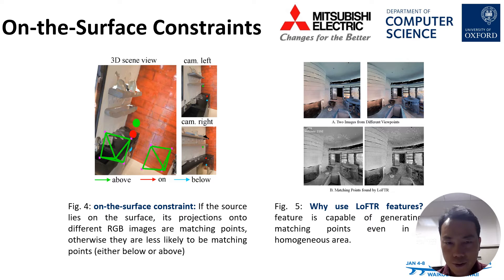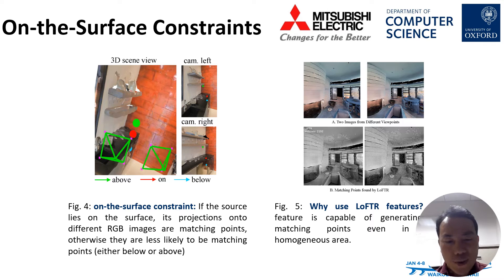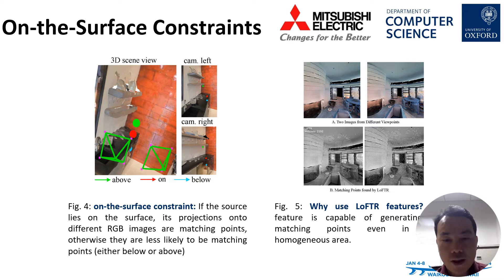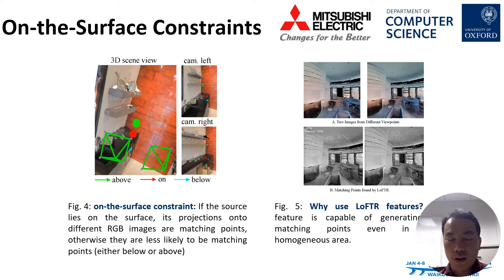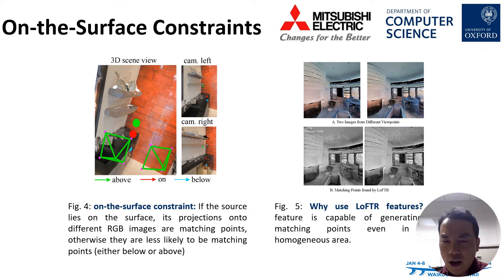We introduce the on-surface constraint. If the sound source lies on an object surface, its projections onto different RGB images must be matching points. But if the sound source lies above or below the object physical surface, its projections onto different images will not be matching points, as shown in Figure 4. In Figure 5, we show why we chose to use the LoFTR features — because LoFTR features can produce matching points even on texture-homogeneous areas.